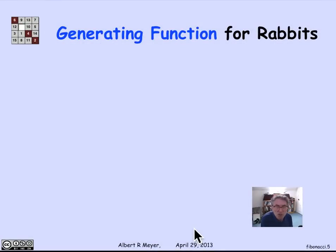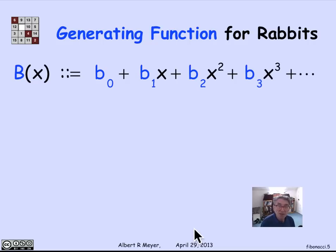Now what we're interested in doing is examining the generating function for rabbits, for rabbit growth. So in other words, we're looking at the generating function B of x, where the coefficients are those numbers of breeding pairs for each n. So the coefficient of x to the n is the number of breeding pairs that we have on day n. B1 x, B2 x squared, B3 x cubed, and so on.